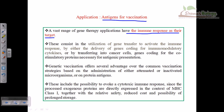This way cells start presenting antigens, enabling vaccination. We can activate the immune response inside a body by modulating the secretion of immunomodulatory cytokines. Genetic vaccination offers several advantages over common vaccination strategies.